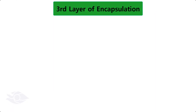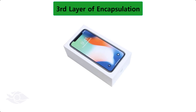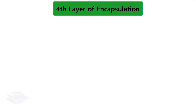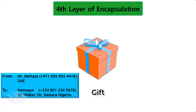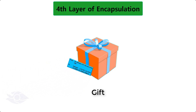Third layer of encapsulation: we put the pouch in a box meant for the smartphone. On the box, useful information about the phone is written. In this form, it is called a smartphone box and not a pouch. Fourth layer of encapsulation: we wrap the box as a gift and attach a slip containing the name, phone number, and home address of our recipient as the receiver of the item.